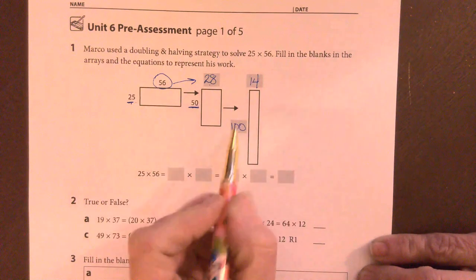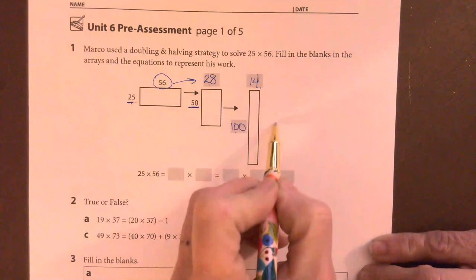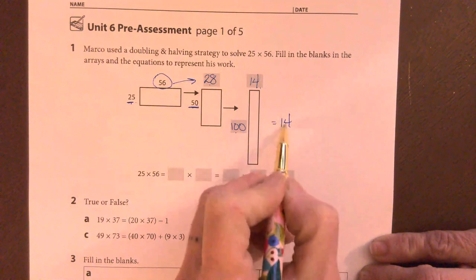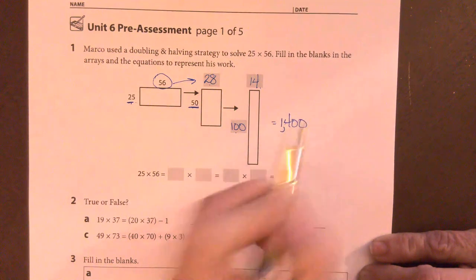And 100 times 14 is 1,400, or 1,400 if you'd like to put the commas in.